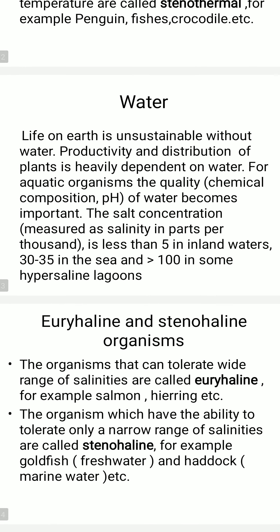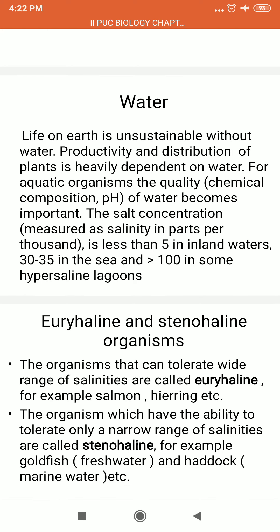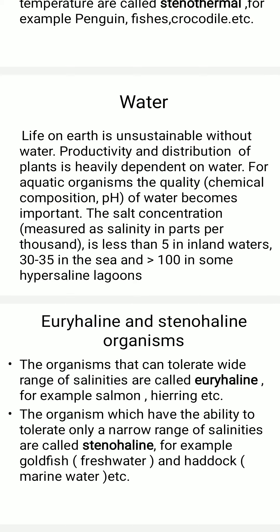Based on tolerance to salinity range, organisms are classified into two types. Organisms that can tolerate a wide range of salinities are called euryhaline organisms — for example, salmon fish and herring. Organisms that can tolerate only a narrow range of salinities are called stenohaline organisms — for example, goldfish in freshwater and haddock in marine water. This is important for two-mark or one-mark questions with examples.